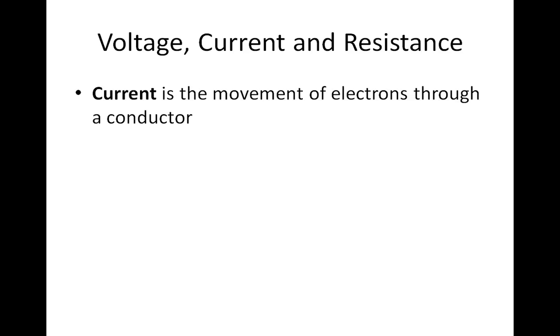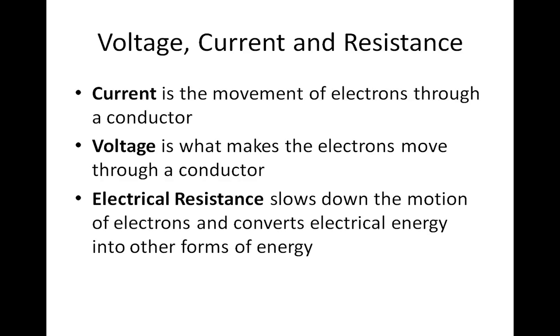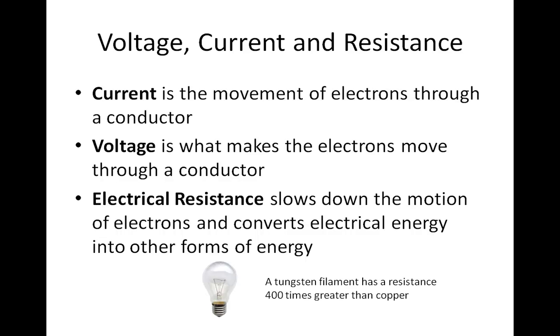Current is the movement of electrons through a conductor. Voltage is what makes the electrons move through a conductor. Electrical resistance slows down the motion of electrons and converts electrical energy into other forms of energy.